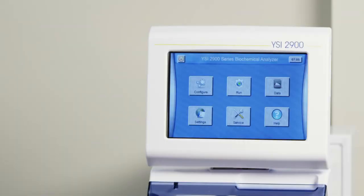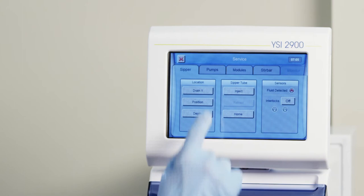On the main screen of the instrument, touch the service icon, then the pumps tab. Turn the appropriate cal pump on for 90 seconds to prime and flush the cal system.